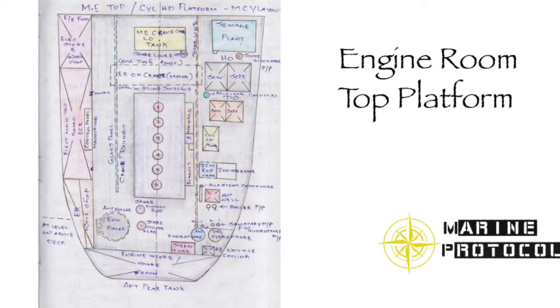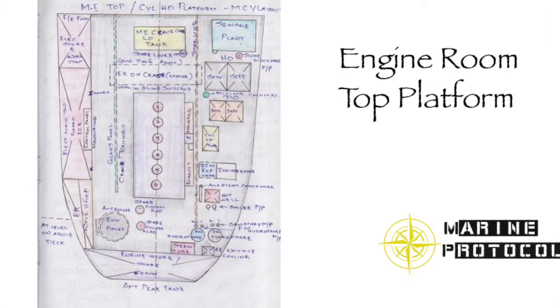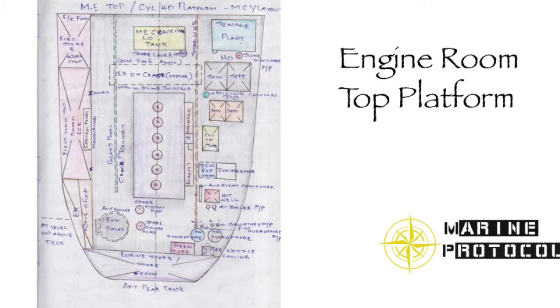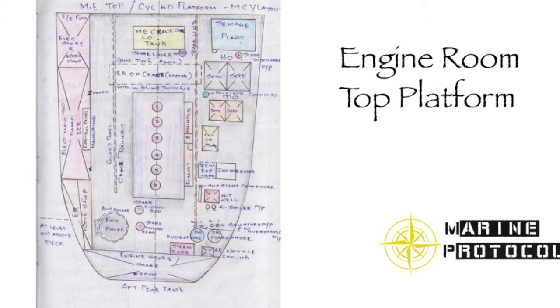Tanks: 1. Main Engine Crank Case Lube Oil Tank, 2. Hot Well Cascade Tank, 3. Diesel Oil Settling Tank, 4. Diesel Oil Service Tank, 5. Heavy Oil Settling Tank, 6. Heavy Oil Service Tank, 7. Mixing Column, 8. Cylinder Lube Oil Storage Tank, 9. Jacket Cooling Water Expansion Tank.